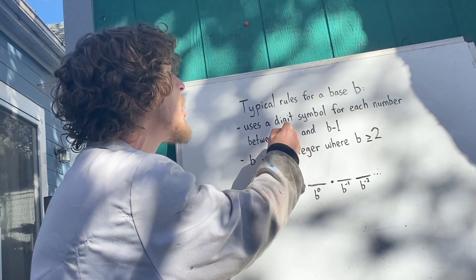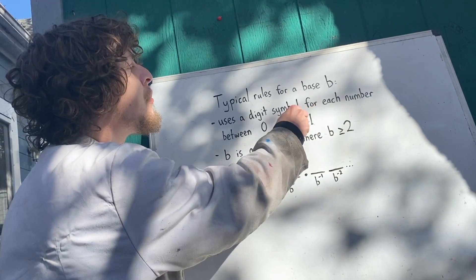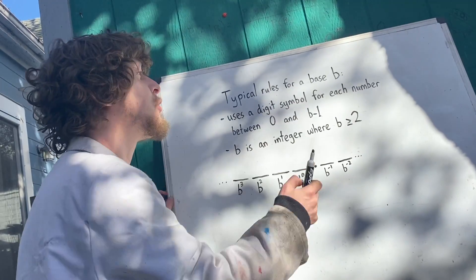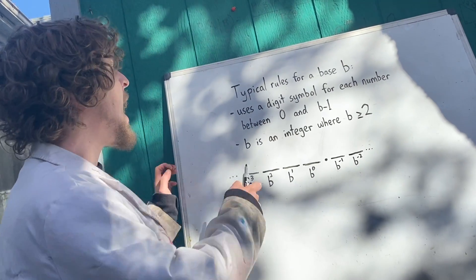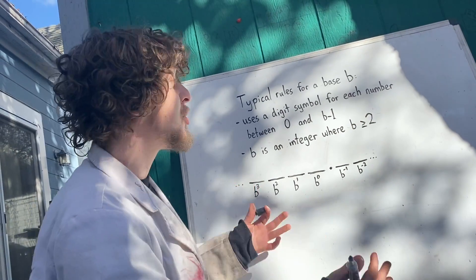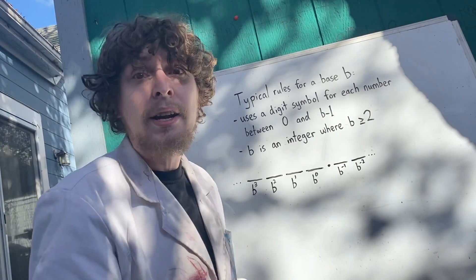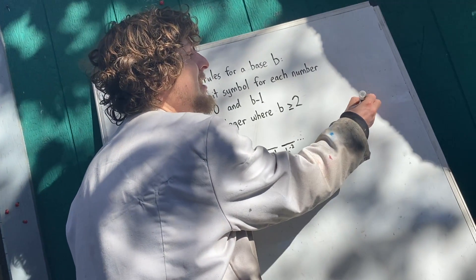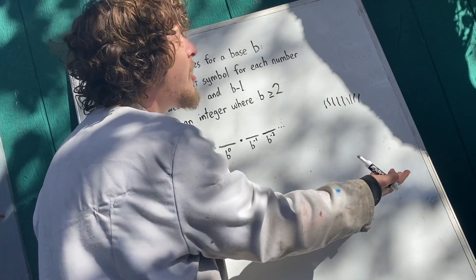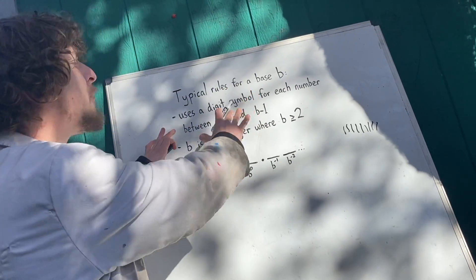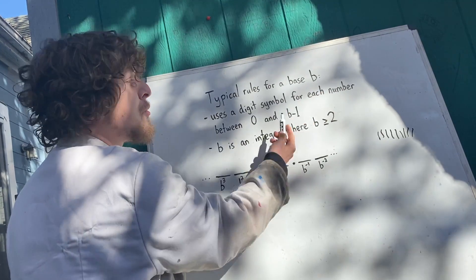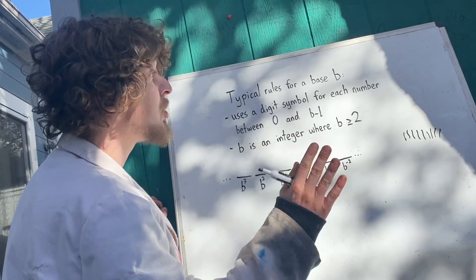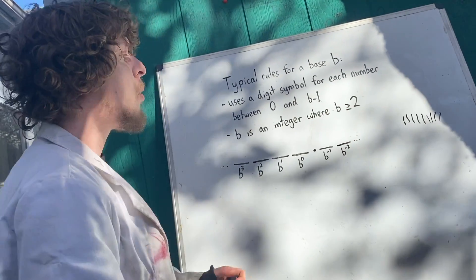We're used to b being 10 — ones, tens, hundreds, tenths, hundredths, and so on — and we're used to needing a character for all numbers zero through nine, which is one less than our base number. So in base 6 we'd only need characters for zero through five; in base 12 we'd need new characters for 10 and 11. B is typically a number greater than or equal to two. Base one wouldn't really work this way — you can think of tally marks as kind of like base one, but using digits from zero through b minus one would just be using zeros, and that doesn't work the same way.